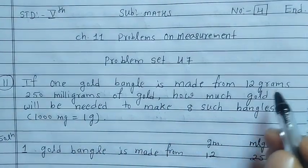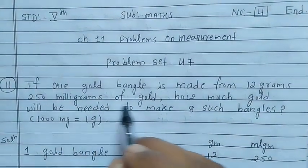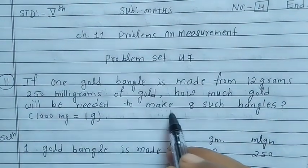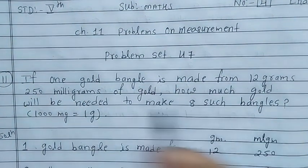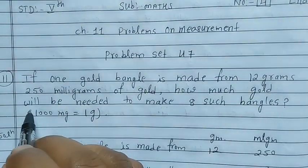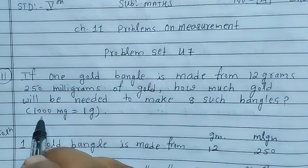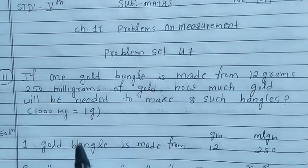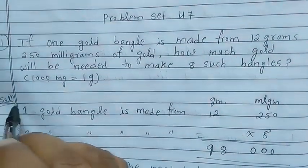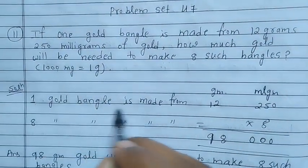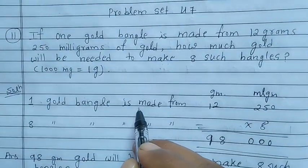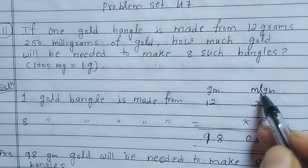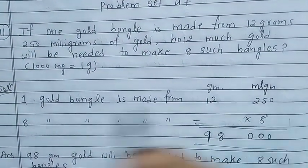One conversion is given: 1 gram is equal to 1000 milligrams. Now write down the solution. One gold bangle is made from 12 grams and 250 milligrams, so eight gold bangles — we have to multiply. Write 8 × 12 grams 250 milligrams.